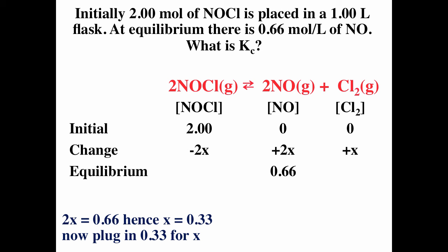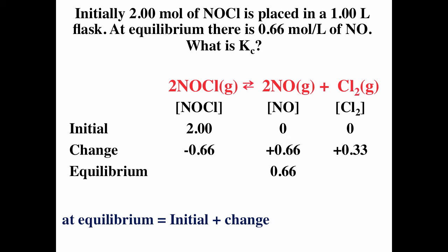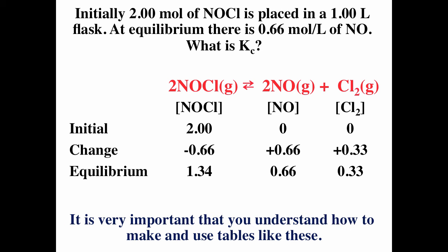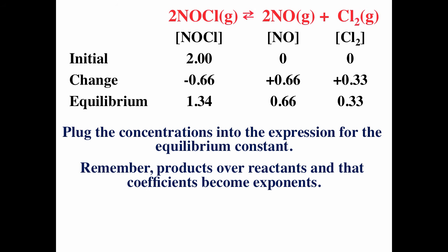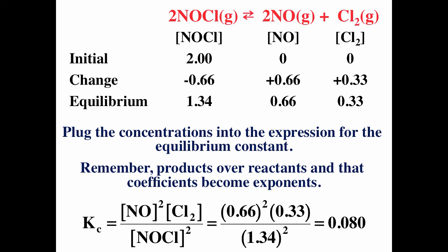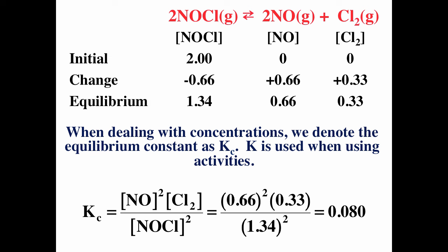Solving, x equals 0.33. We plug in 0.33 for the other x's: NOCl at equilibrium is 2 minus 0.66, which gives 1.34, and Cl₂ at equilibrium is 0.33. These ICE tables are very important — initial concentrations, changes with x's (negative for reactants, positive for products), coefficients in front of x's, and equilibrium equals initial plus change. Plugging into the equilibrium expression gives Kc equals 0.08.